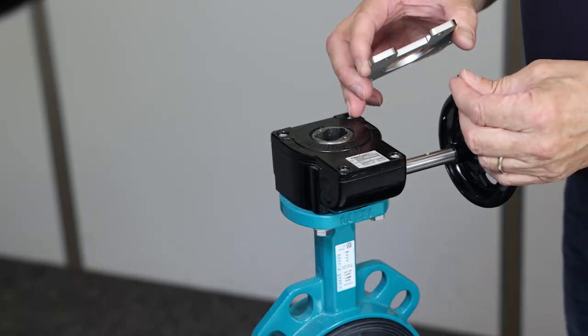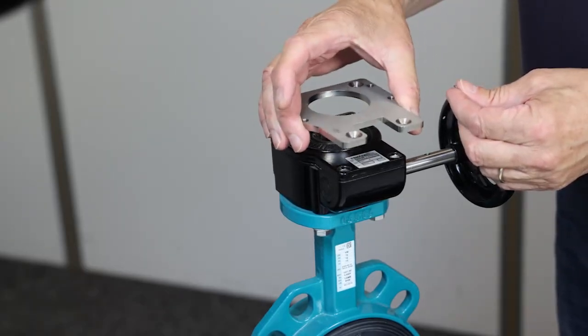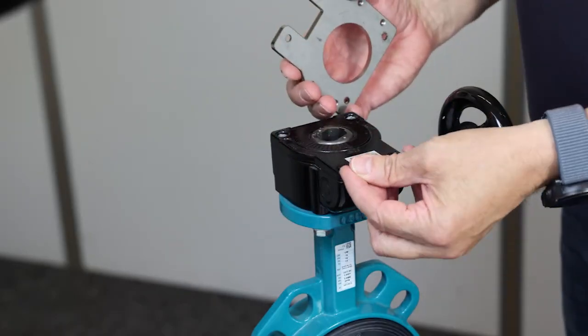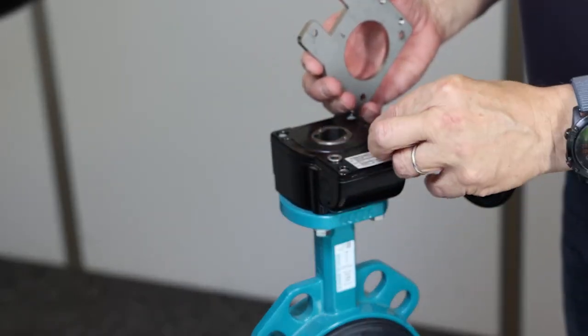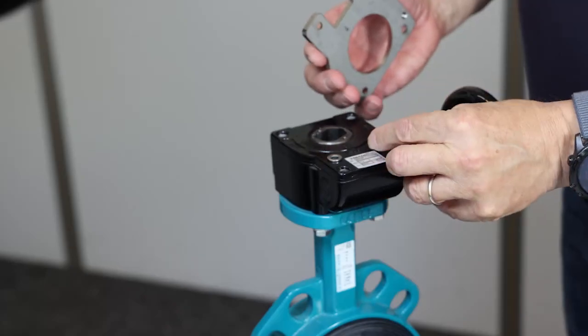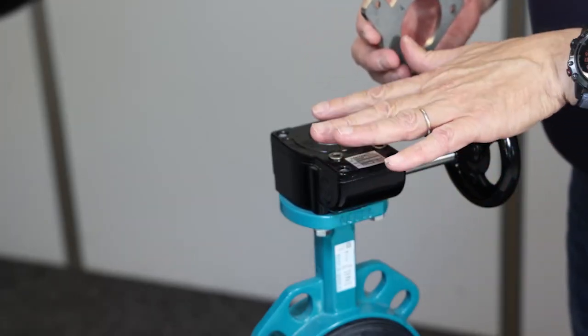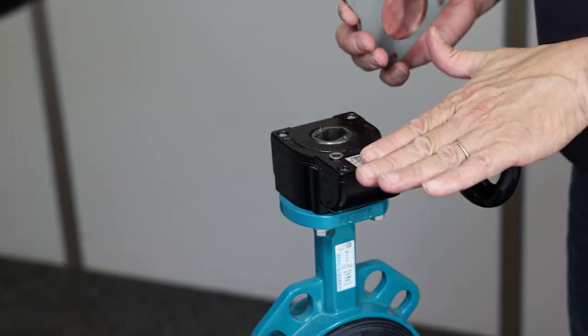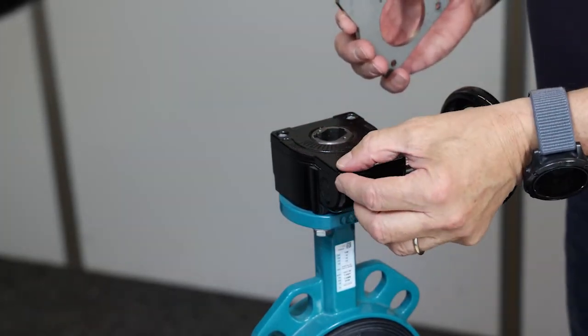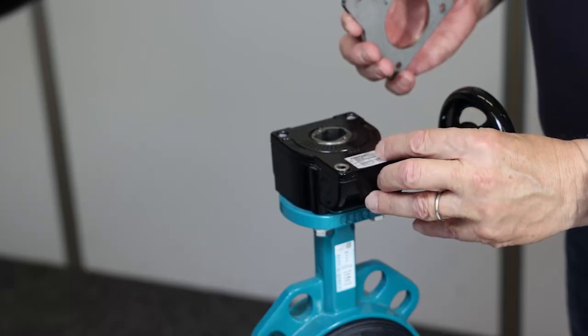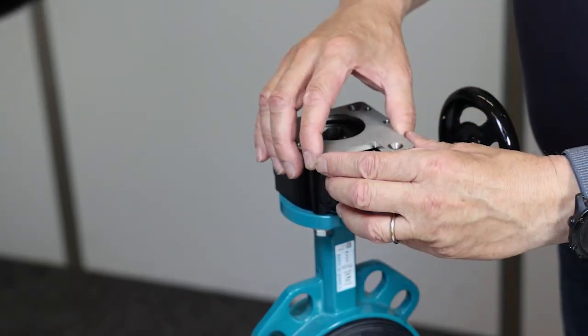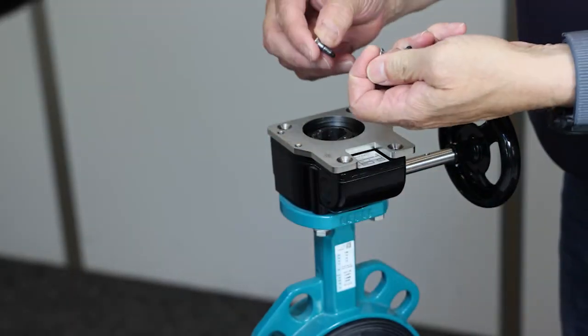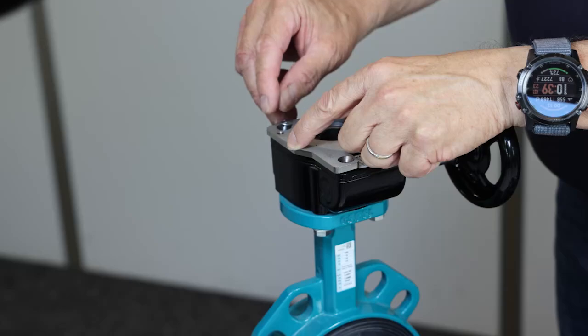As next step I will mount the fixation plate for the limit switch box. First I need to add two washers on the left side to compensate the level of this part of the gear to this part of the gear. This one is a bit lower so I need to compensate with two washers. I take the four screws I removed before.